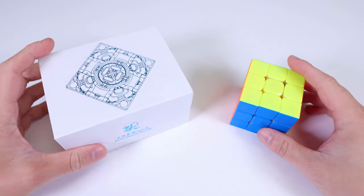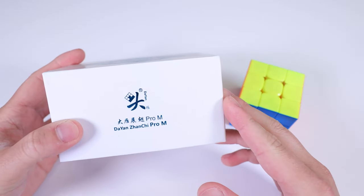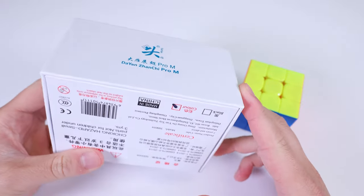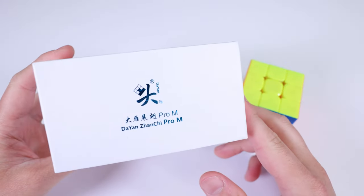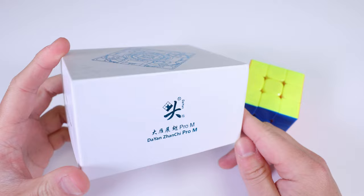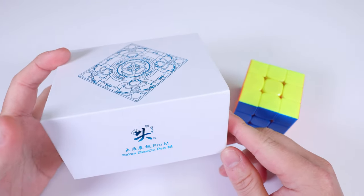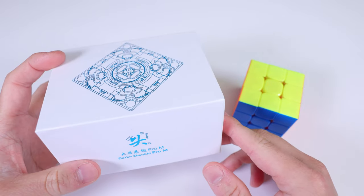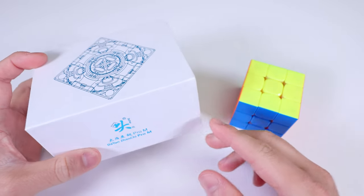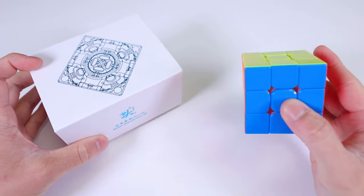Hey everyone, this is Phil, and today I'm going to show you this Zanchi Pro-M. This is a modern remake of the legendary Dayan Zanchi, a cube that dominated the speedcubing scene in 2012. Basically, that was pretty much the only cube people used back then, and it's great to see Dayan make a new copy.